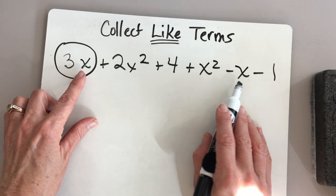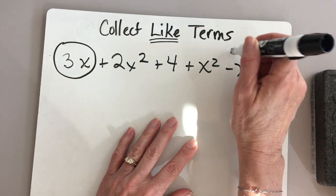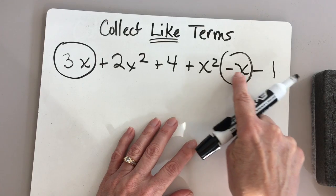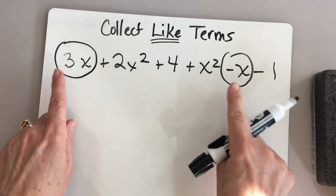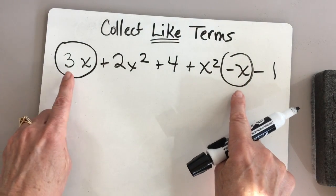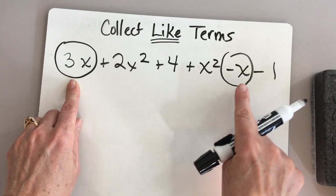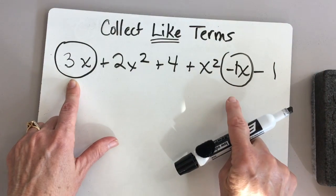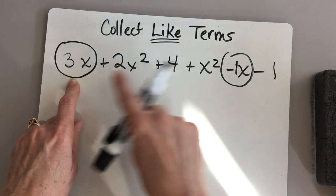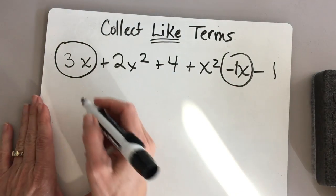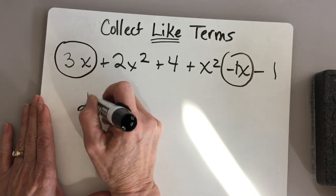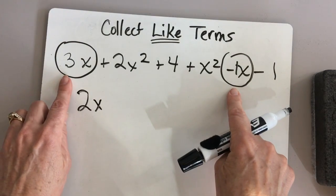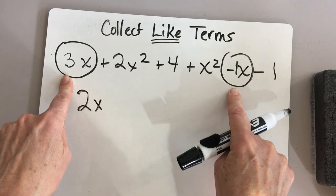Here's another x — this would be a like term. I'm combining that operation with that x. I'm combining these terms: 3x minus x — remember, that's like a 1 in there — that would be 2x. So 3x minus x would be 2x. So 3x minus 1x equals 2x.